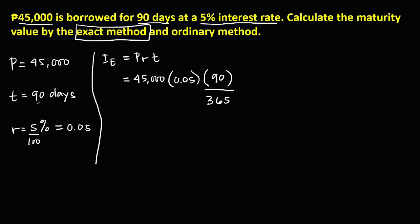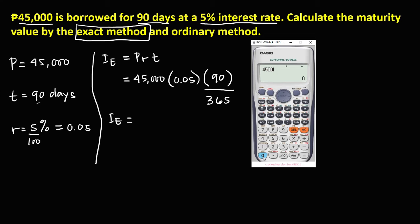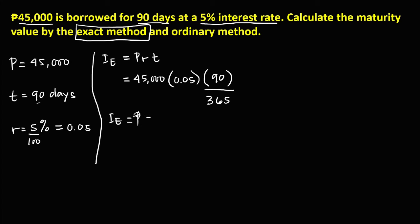We need to convert the time in years. To solve for the exact interest: 45,000 times 0.05 times 90, divided by 365. So we have 45,000 times 0.05 times 90, then divide by 365. The exact interest is 554.79.